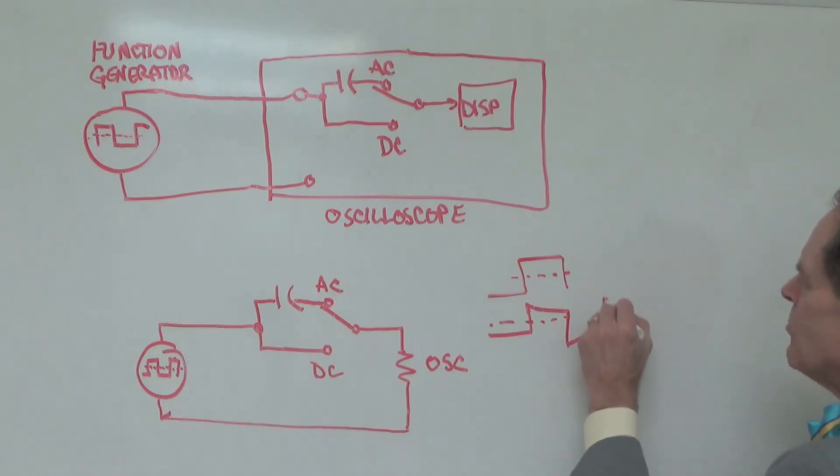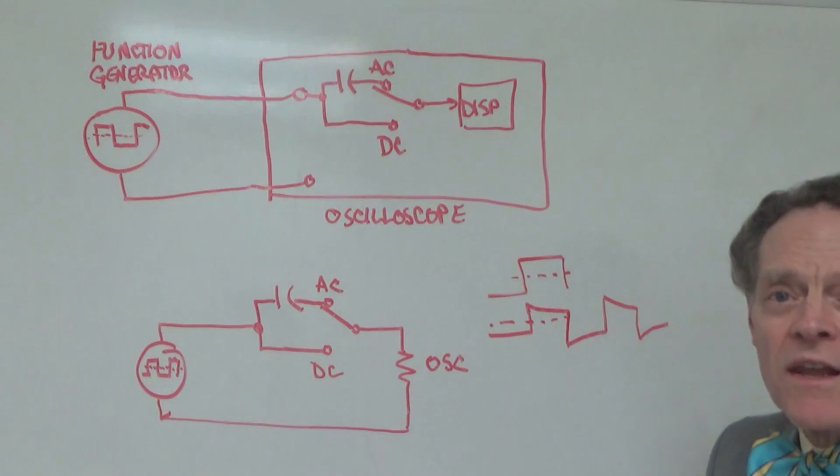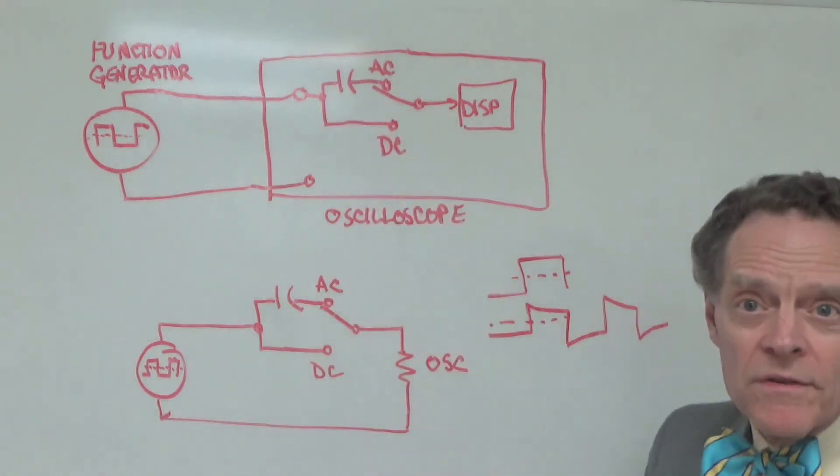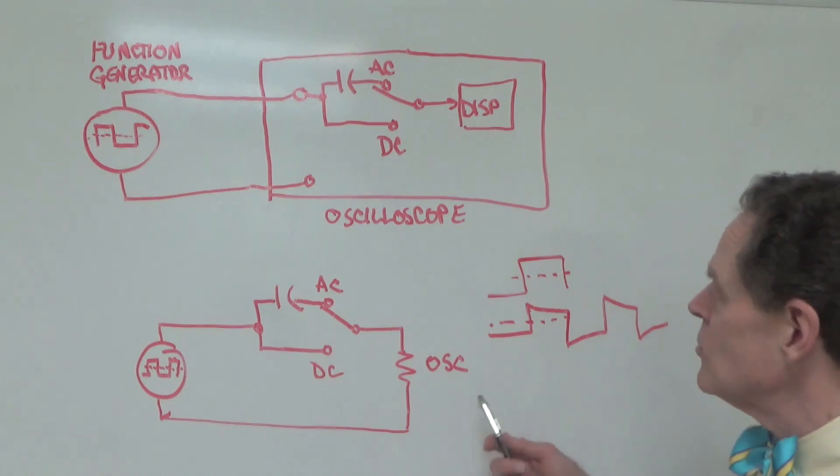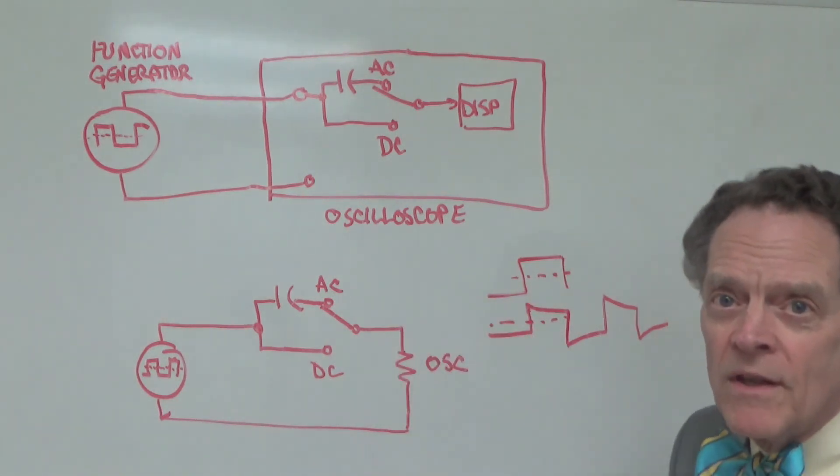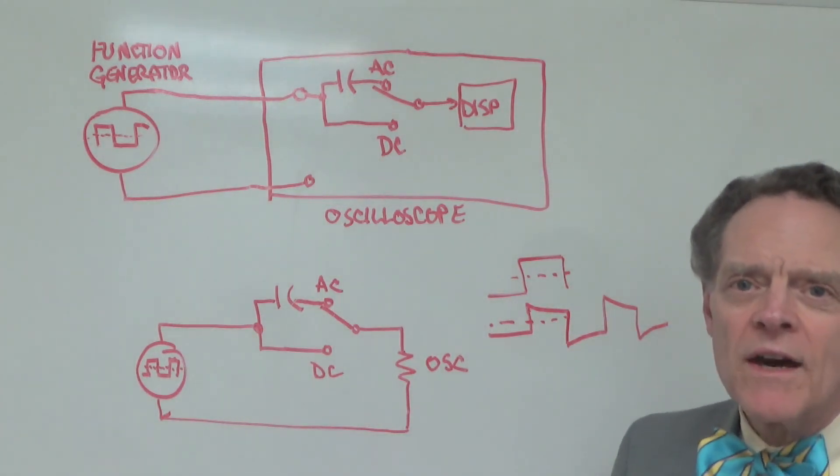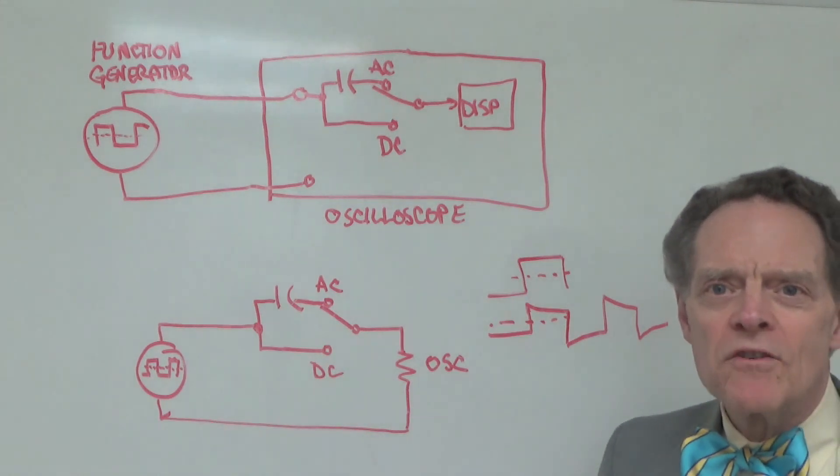And so, what we end up with is a waveform that has this characteristic slant to it. And when you see that, that is a dead ringer indication for the fact that the oscilloscope is AC coupled and not DC coupled. So, you wouldn't get a good square wave until you DC coupled the scope. So, I hope that helps to explain what's actually going on in the oscilloscope. And thank you for watching.